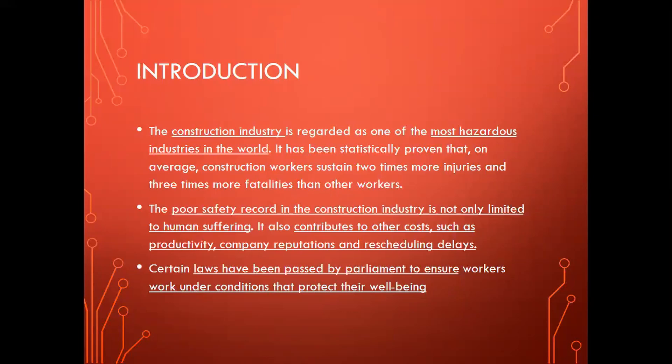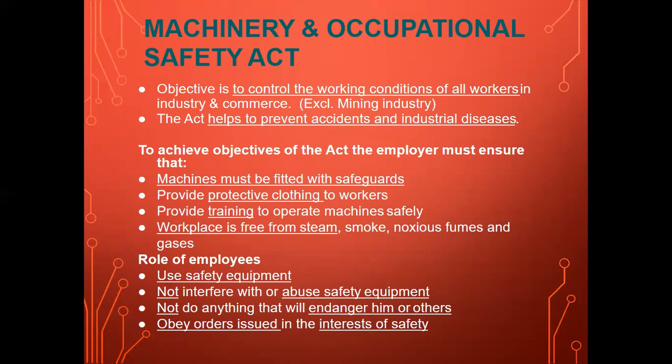Certain laws have been passed by parliament to ensure workers work under conditions that protect their well-being. One of those acts is the Machinery and Occupational Safety Act. Its objectives are to control the working conditions of all workers and help prevent accidents and industrial diseases. To achieve these objectives, the employer must ensure machines are fitted with safeguards, protective clothing is given to workers, training is provided to operate machines, and the workplace is free of steam, smoke, and other fumes and gases.